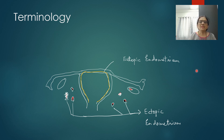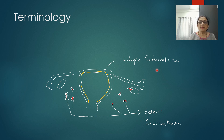The terminology used when describing endometriosis: normally situated endometrium is called eutopic endometrium, whereas endometrium-like tissue present outside is called ectopic endometrium.